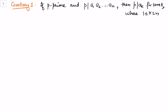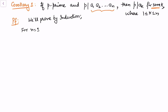Hence the result is proved: either p divides a, in which case we are done, or if not, then p must divide b. From this theorem we now have Corollary 1: if p is prime and p divides a product a1·a2·...·an, then p divides a_k for some k between 1 and n. We prove this by induction. For n = 1, p divides a1, so the result is true.